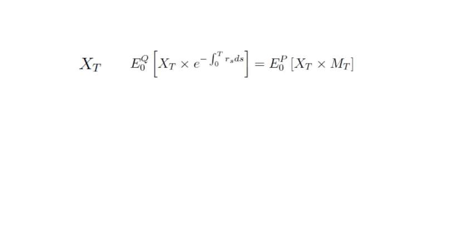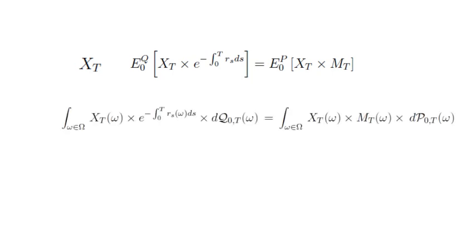Mathematically, that means the following. Let's rewrite the expectation operator as an integral. We hence end up with the following expression where we integrate across all possible events or states of the world, and we weight these with the respective probability.